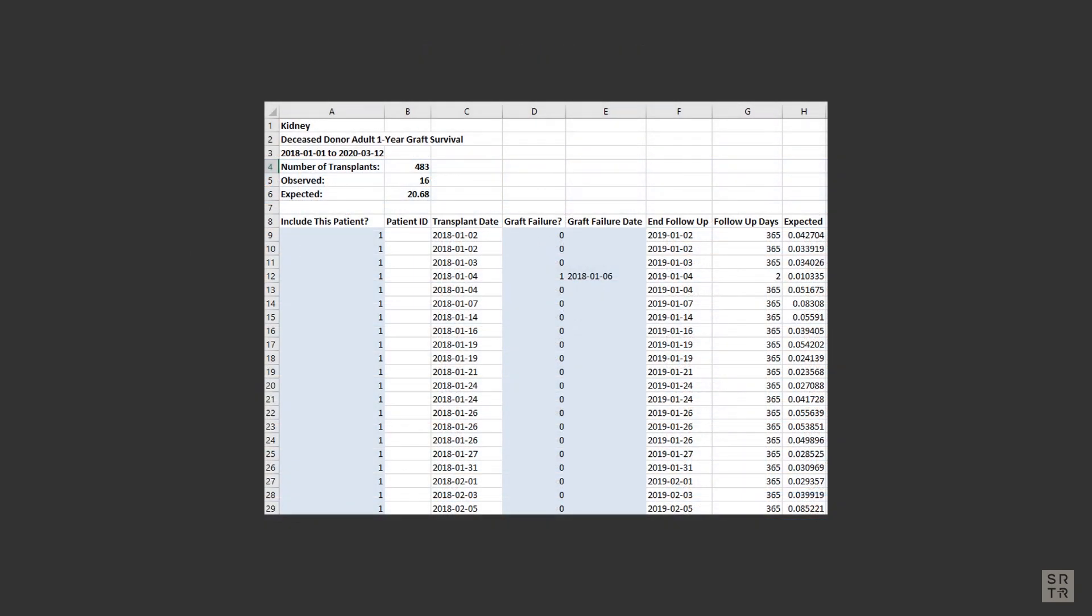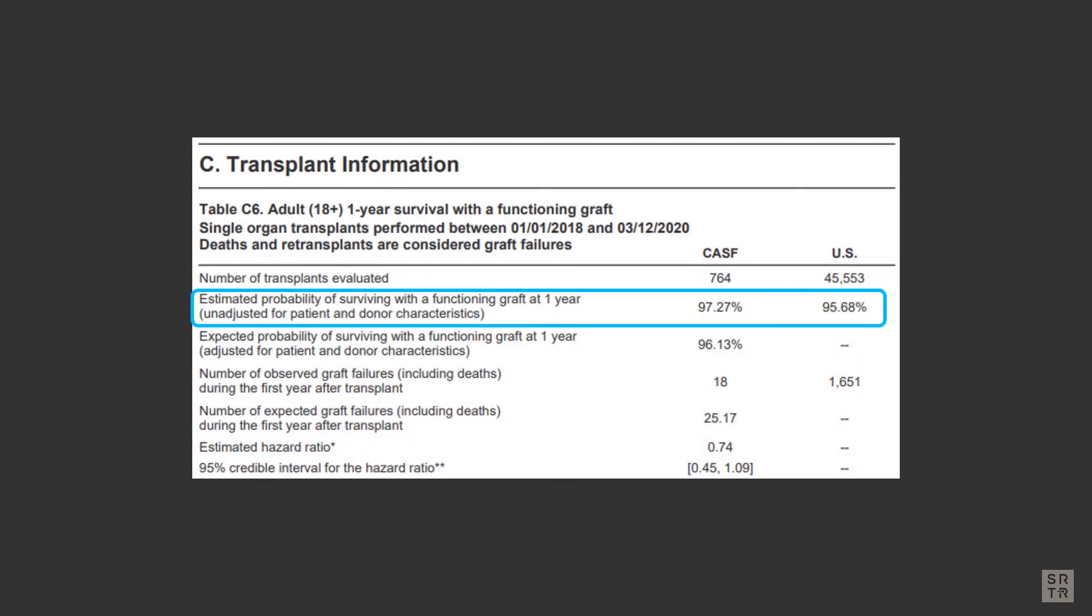Now you will be able to apply this method to your own recipient list and understand how the estimated probability is derived for your program, and why SRTR refers to this value as estimated rather than observed.